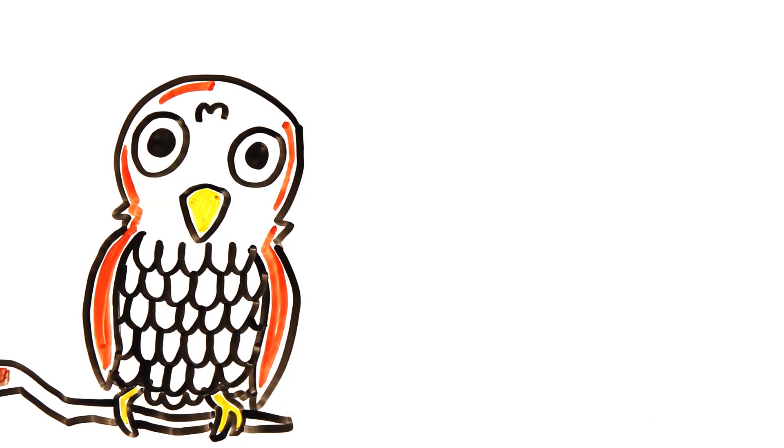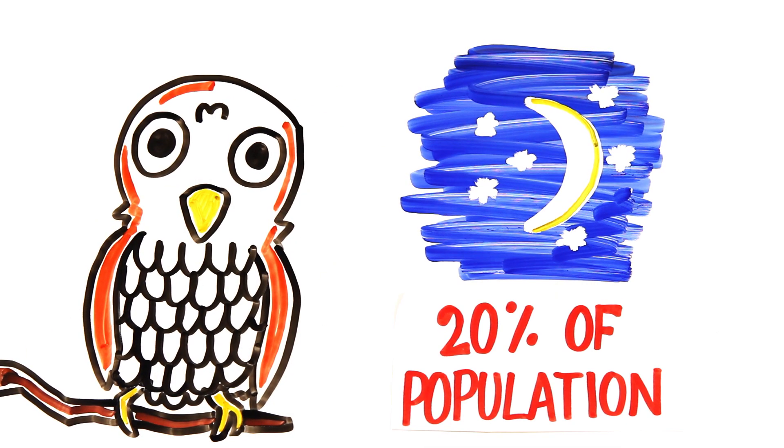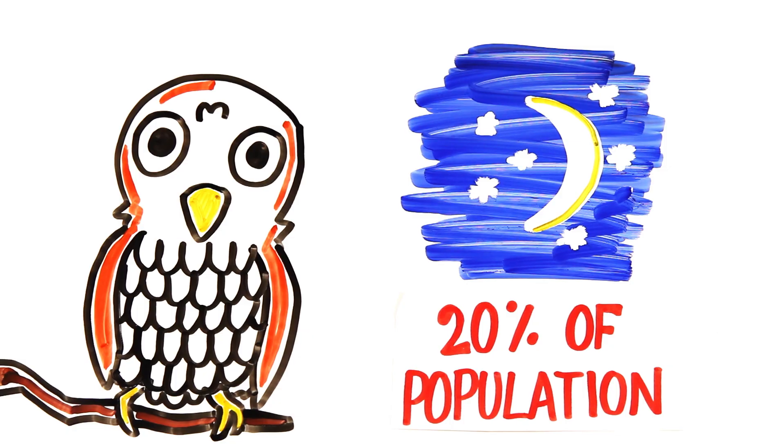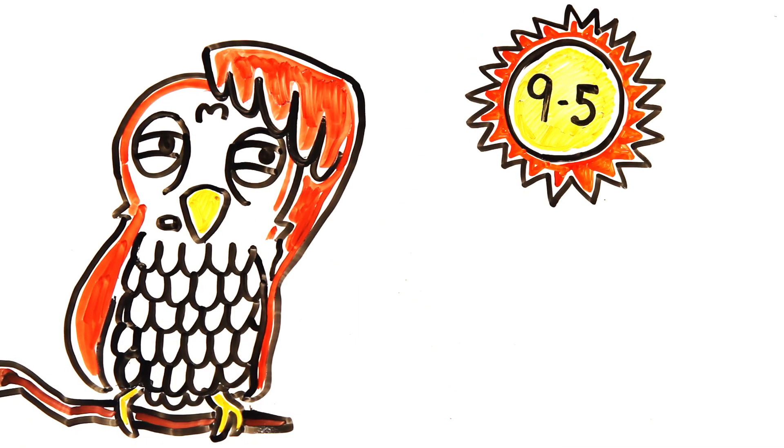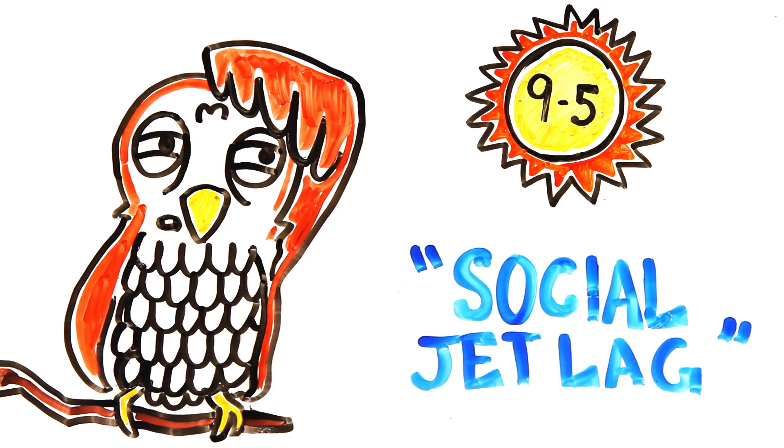Finally, you might also simply be a night owl. Around 20% of the population have genetics making them predisposed to staying up late. But living in our 9 to 5 world may make it difficult for you to get the proper amount of sleep. In fact, scientists call this phenomenon social jet lag, where night owls feel like they're living in the wrong time zone every day.